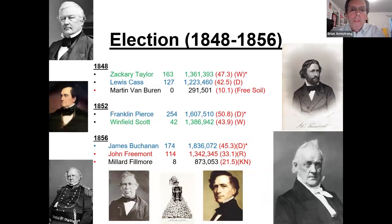The next few elections are what my professor called the 'doughfaced presidents' — not particularly good at handling the slavery issue, making things get worse regarding the North-South situation. Zachary Taylor was elected with 47% as the last successful Whig candidate, then died a few years later and was replaced by his vice president, Millard Fillmore.